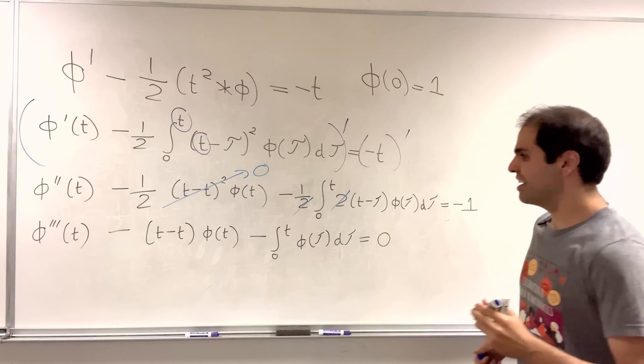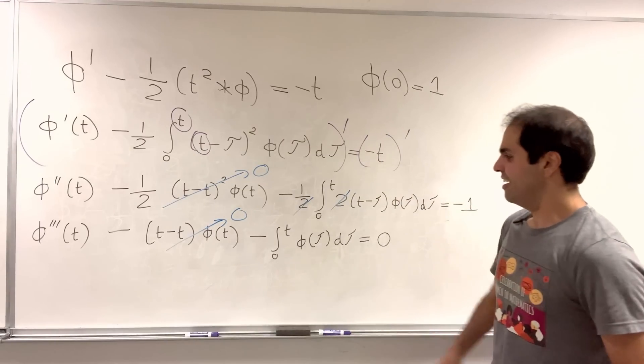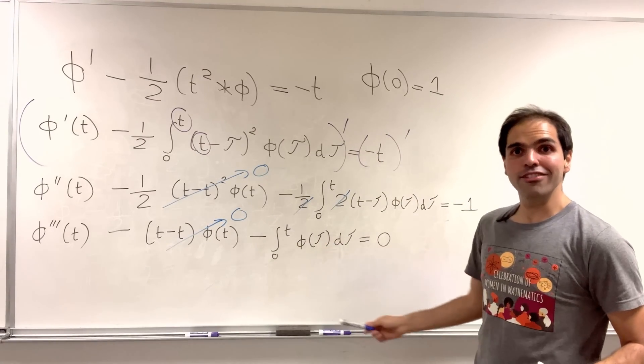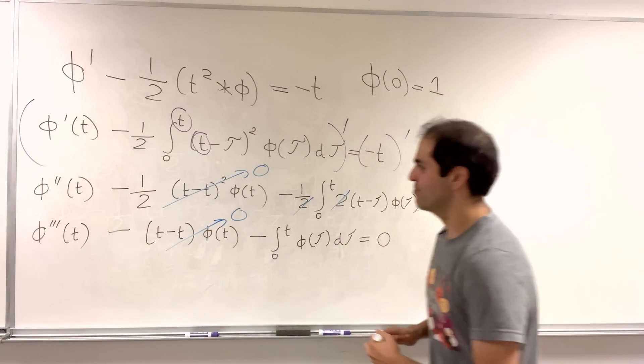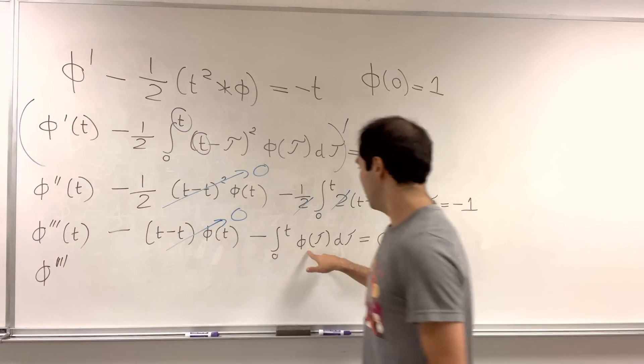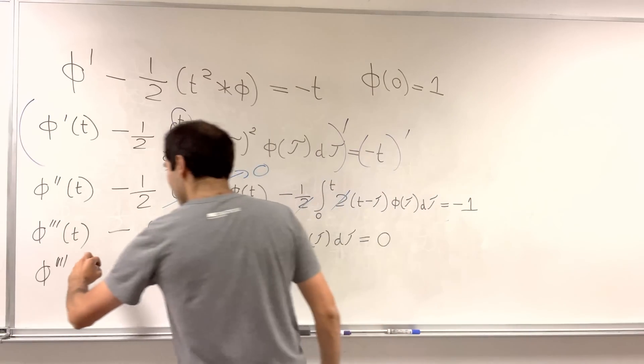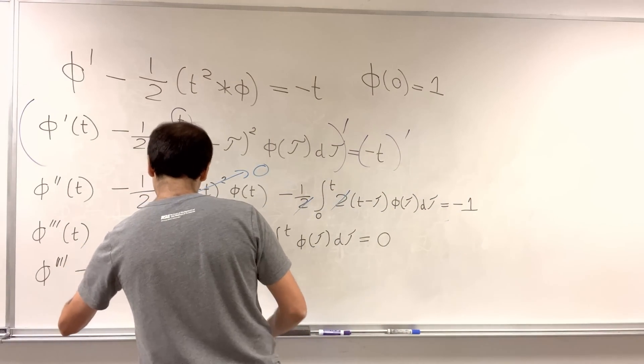And, once again, we have a nice cancellation. This becomes zero. And, one last time, let's differentiate this, because this isn't bad at all. And, we get phi quadruple prime minus, derivative of integral is the function, minus phi equals zero,